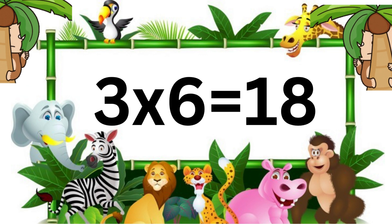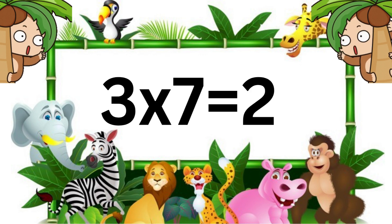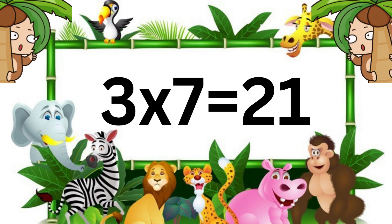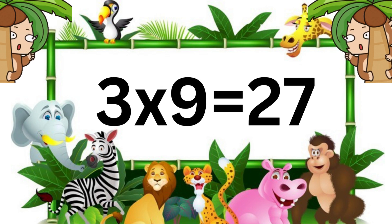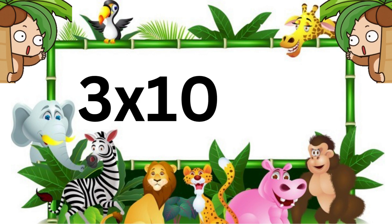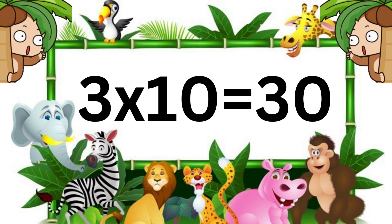Three six's are eighteen. Three seven's are twenty-one. Three eight's are twenty-four. Three nines are twenty-seven. Three tens are thirty.